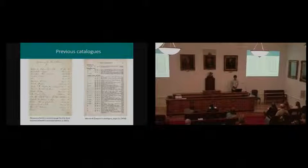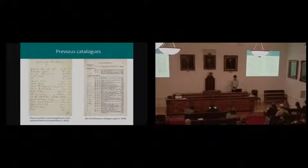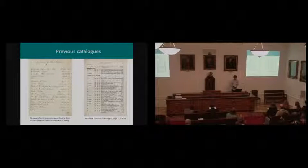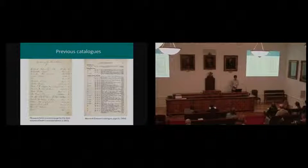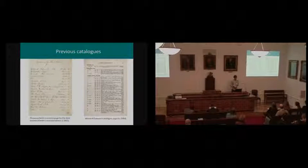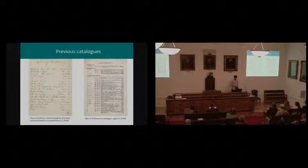In the 1930s, Warren Dawson wrote a printed catalog which became the main way to access this collection. But again, this just focused on the bound volumes presented by Pleasance Smith. So it didn't include the additional collections that have been gathered since the first presentation of the correspondence.